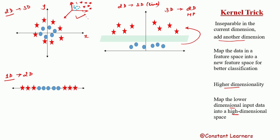Now let's look at the equation for this. We are adding the z-dimension to data that is already in x and y dimensions. The equation for z is going to be x-squared plus y-squared. This transforms the data into a higher dimension.